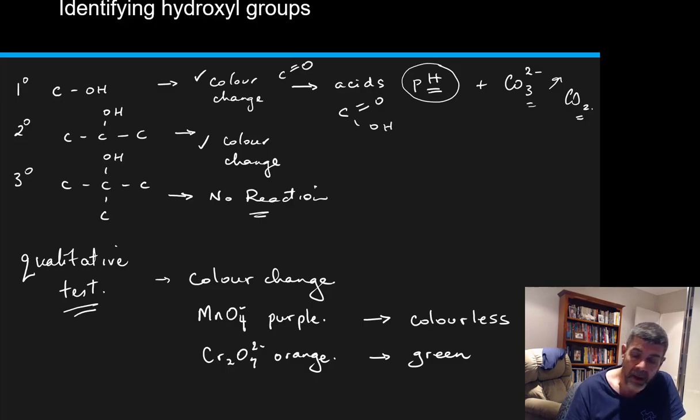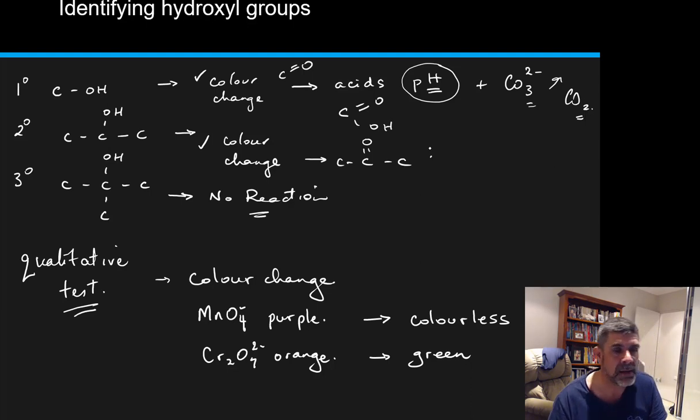For a secondary alcohol, what we're going to produce is a ketone. Our hydroxyl group becomes a double bonded oxygen. Again, we have a color change, and we're going to have our new product, which is the ketone or the alkanone of whatever the original secondary alcohol was.